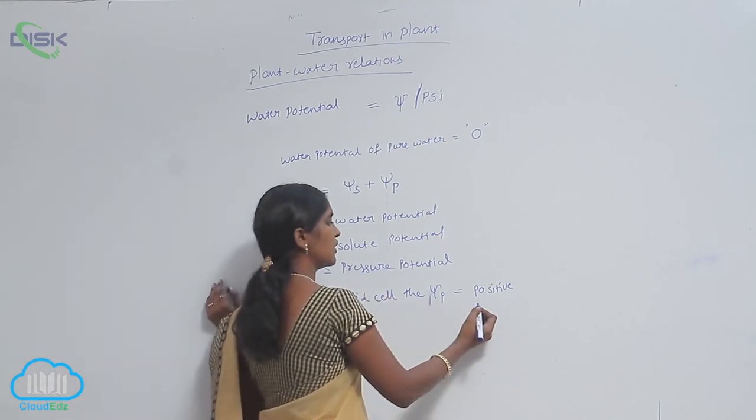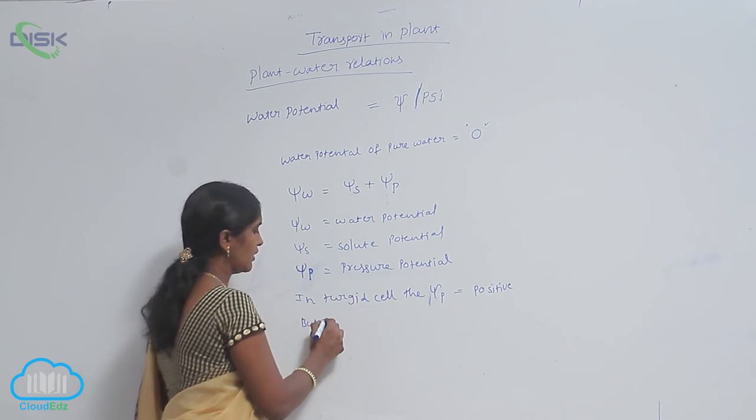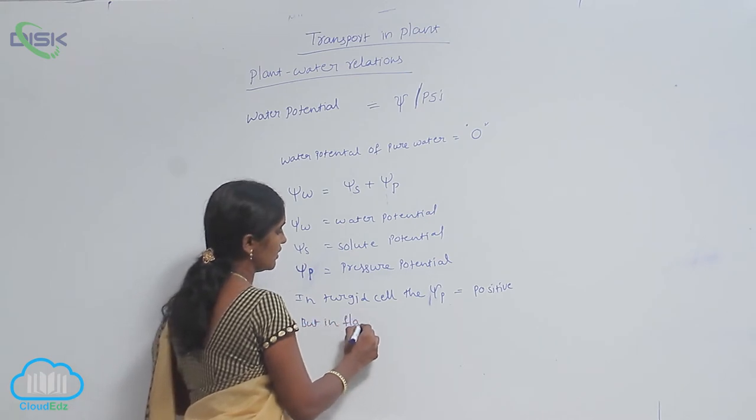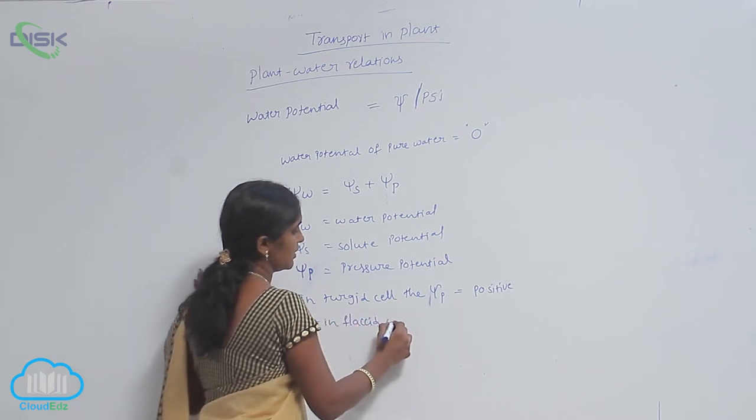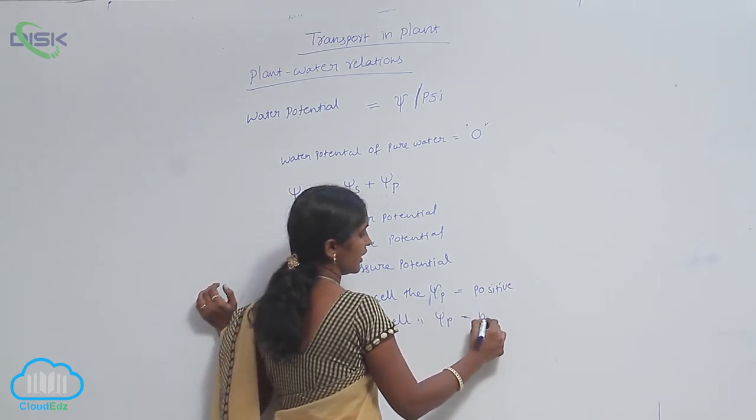In turgid cell, the pressure potential is positive, but in placid cell, the pressure potential is negative.